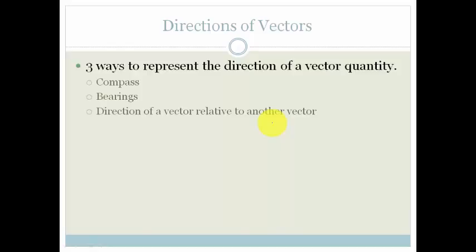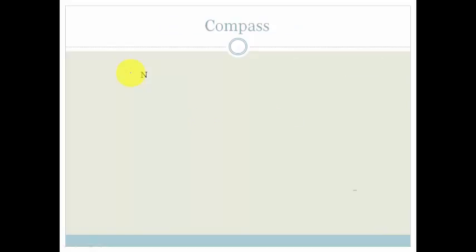Now, there are three ways we can represent the direction of the vector. We can either use compass or we can use bearings or the direction of a vector relative to another vector. So, let's just go through these three. The first one is a compass. As you know, there's north. Then there's east, south and west. And we always tell our directions with respect to these four cardinal points.